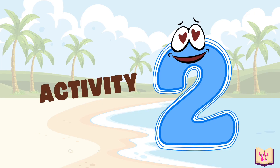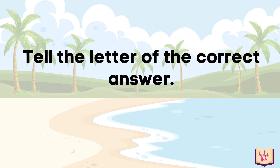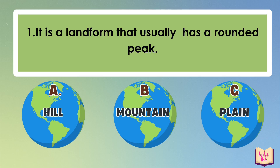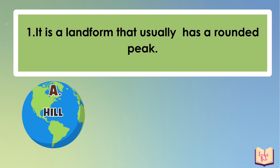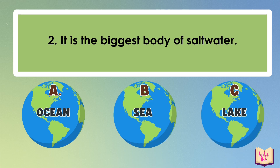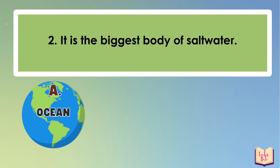Let us proceed to our second activity. Tell me the letter of the correct answer. First, it is a landform that usually has a rounded peak. A. Hill. B. Mountain. C. Plain. The correct answer is hill. Number 2: It is the biggest body of salt water. A. Ocean. B. Sea. C. Lake. The correct answer is letter A, Ocean.